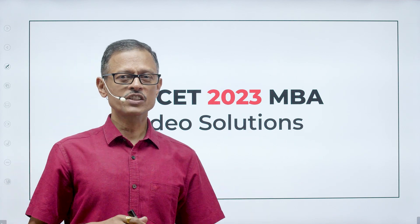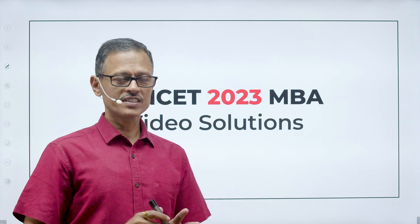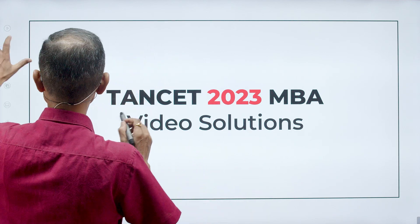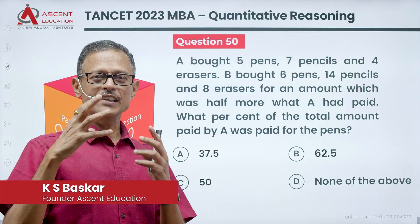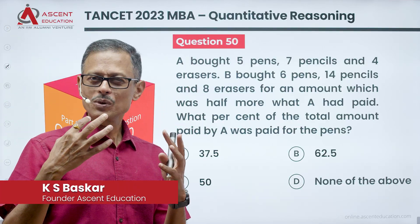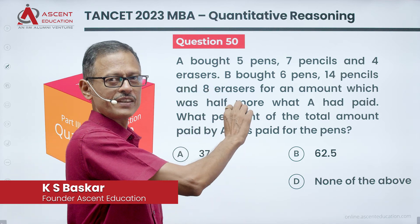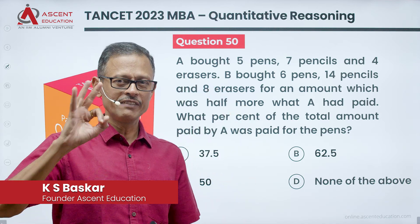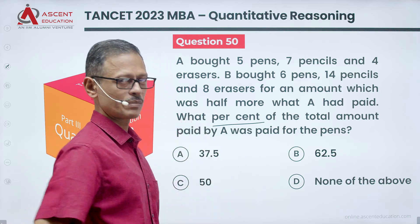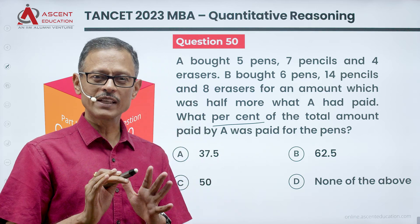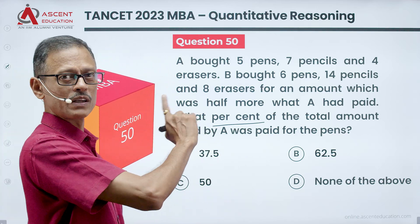Question number 50, Tanset 2823 MBI Question Paper Video Solution. This is a beautiful aptitude question. It's not very difficult, but the way it is worded and the equation framed is interesting. We are going to use linear equations with 3 variables, plus a little bit of percentages concept — mixing them both. Good question. Let's get started.